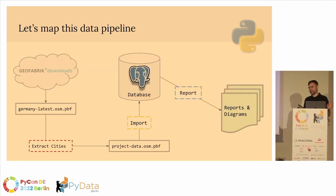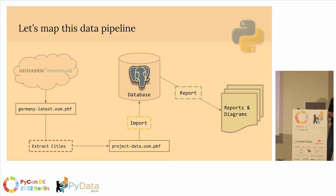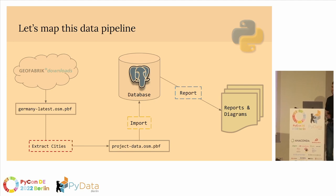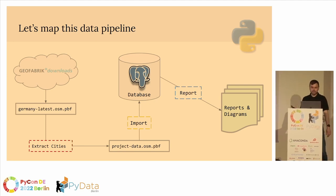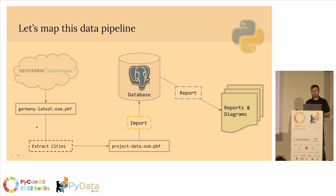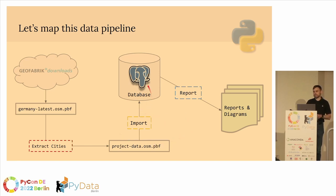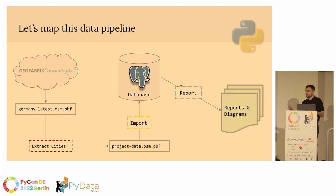Before we get started, let's see what this data pipeline looks like. We're going to initially get some data from Geofabrik and store it in an initial PBF file. Then we'll extract all the cities we care about — the top 10 in Germany — and write that to our own project data file. At the end, we'll import it into a Postgres database, then write all the reports we need, output them as diagrams, and send it to Trashcans United.